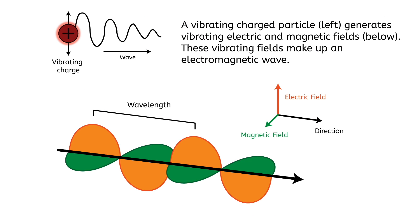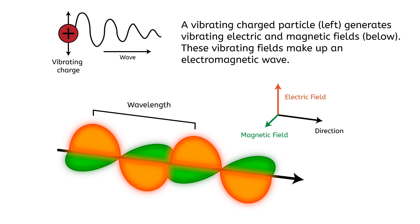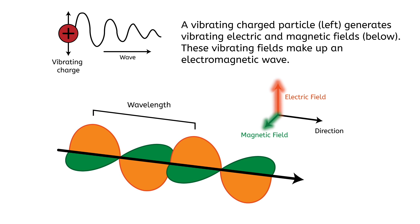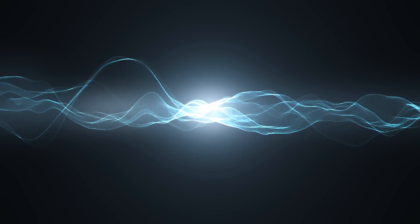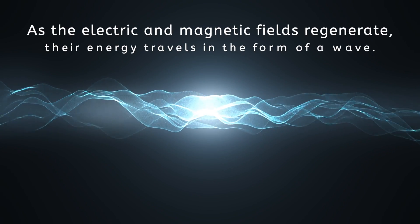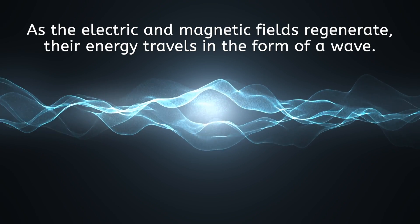What distinguishes electromagnetic from mechanical waves is how they're produced and travel. An electromagnetic wave begins when an electrically charged particle vibrates. The vibrating charged particle causes the electric field surrounding it to vibrate as well. A vibrating electric field in turn creates a vibrating magnetic field. The two types of vibrating fields combine to create an electromagnetic wave. The electric and magnetic fields are at right angles to each other and the direction of wave motion. Because changing electric fields produce changing magnetic fields, and changing magnetic fields produce changing electric fields, the fields regenerate each other. As the fields regenerate, their energy travels in the form of a wave.